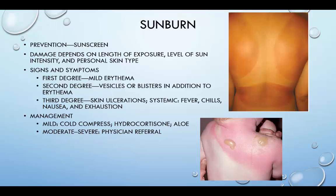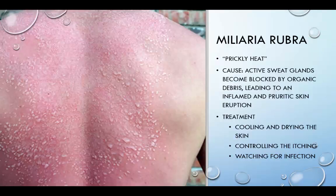Signs and symptoms of sunburn: a first-degree sunburn may result in only mild erythema. In a second degree, vesicles or blisters occur in addition to the erythema. In a third degree, skin ulcerations, a systemic fever, chills, nausea, and exhaustion occur. The management for a mild sunburn is a cold compress, hydrocortisone, and sometimes aloe. For moderate to severe sunburns, individuals should be referred to a physician. Miliaria rubra is prickly heat, caused by active sweat glands becoming blocked by organic debris, leading to an inflamed and pruritic skin eruption. Treatment includes cooling and drying the skin, controlling the itch, and watching for infection.